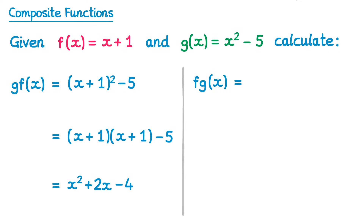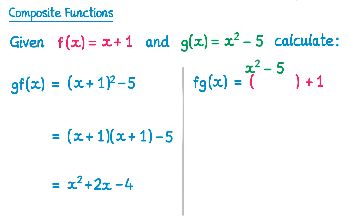What if instead it was fg of x, so the other way around? This means you take an input x, you apply the g function to get g of x, and then whatever you get as the output for that, you put into the f function. So this time we write out the f function, but instead of x, write brackets. So f of x is x plus 1, so we'll write bracket plus 1. Then inside those brackets, we put the whole g function. So the g function is x squared minus 5, so that goes inside the bracket.